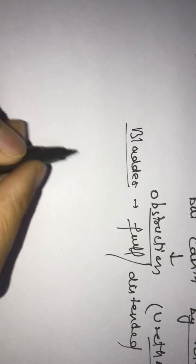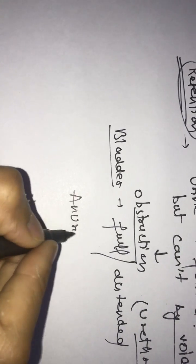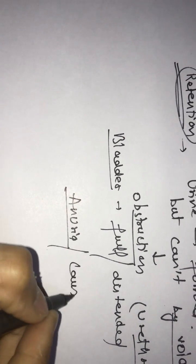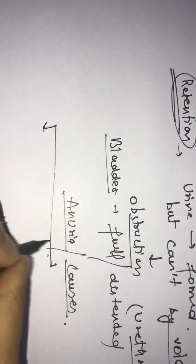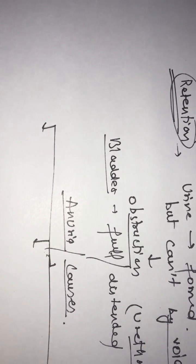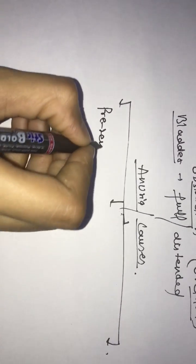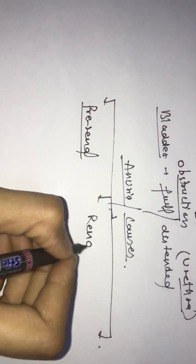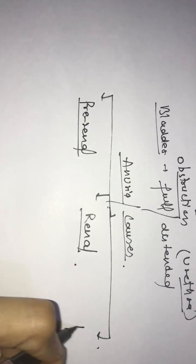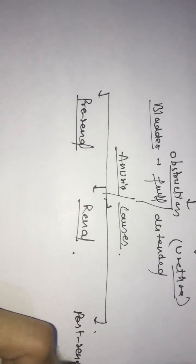If we look at the causes of anuria, we can divide them into three: pre-renal, renal, and post-renal.